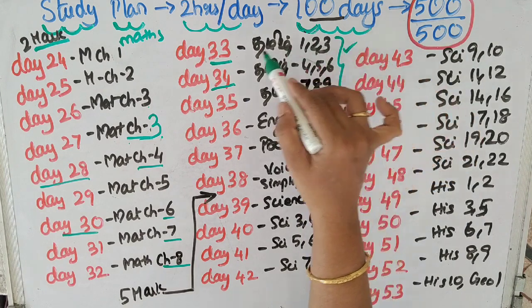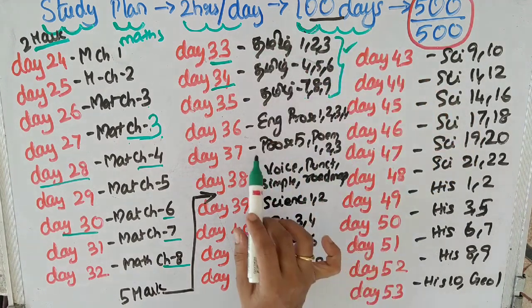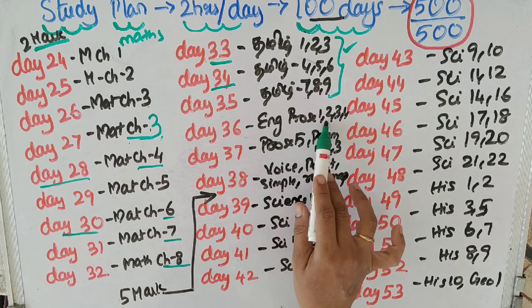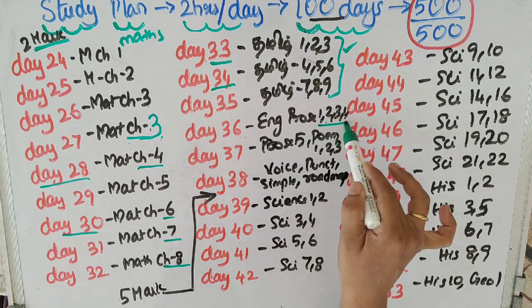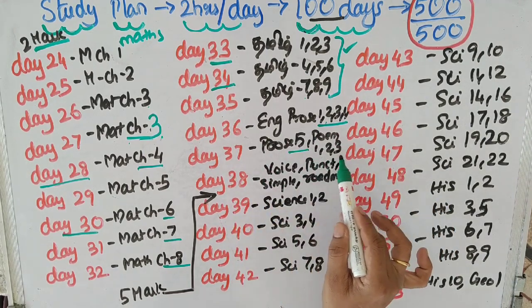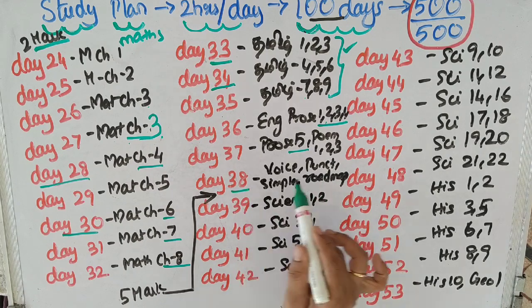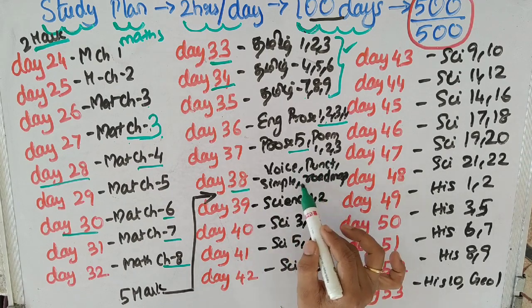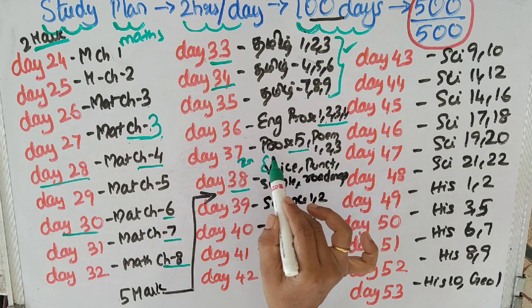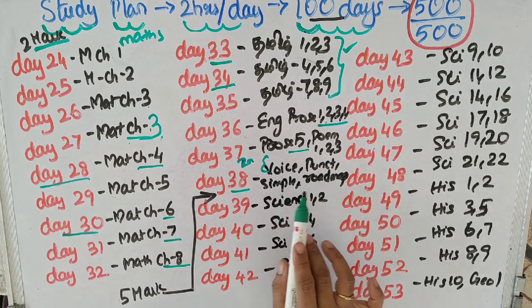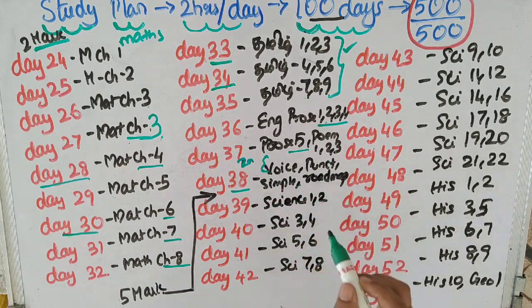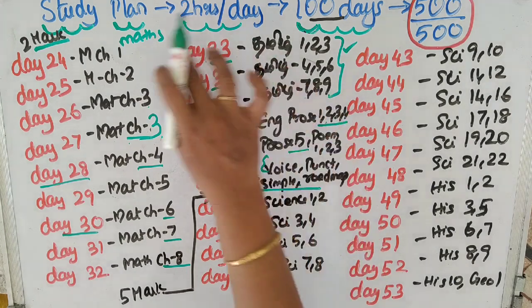Day 36: English prose lessons 1, 2, 3, 4. Day 37: Prose lesson 5 - 4 marks. Day 38: the most important 2-mark topics - voice, punctuation, simple compound complex sentences, and road map. So by day 38 we cover all subjects with 2-mark questions in each subject.